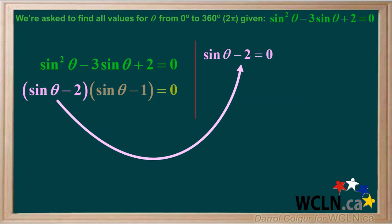We'll start with the first factor: sine theta minus 2 equals 0, so sine theta equals 2. There are no angles for which sine equals 2, so there's no solution to this equation.